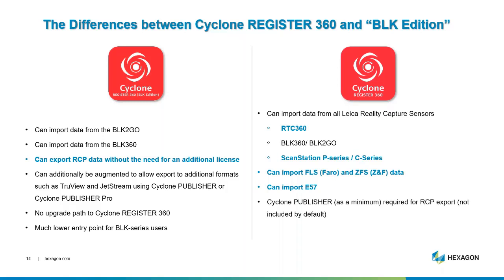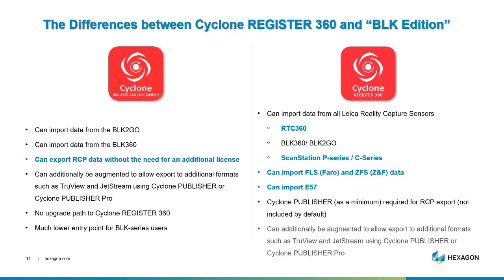Cyclone Publisher, as a minimum, is required for RCP export, which is not included by default. Of course, you can still augment Reg360 with additional licenses to create TrueViews and Jetstream, much like you can with the BLK Edition.